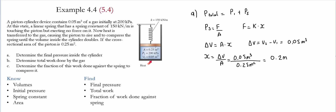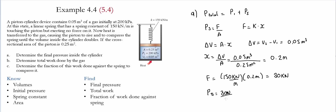The same displacement that the spring has is how much the piston moved inside the system. Now we calculate the force: 150 kilonewtons per meter times 0.2 meters gives a force of 30 kilonewtons. Substituting back into the spring pressure: 30 kilonewtons divided by 0.25 meters squared gives 120 kilopascals.